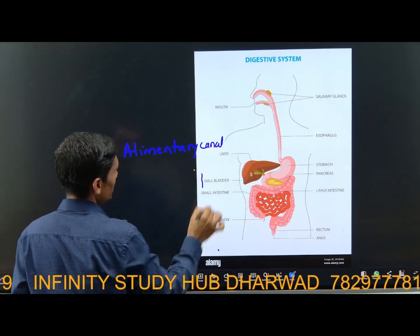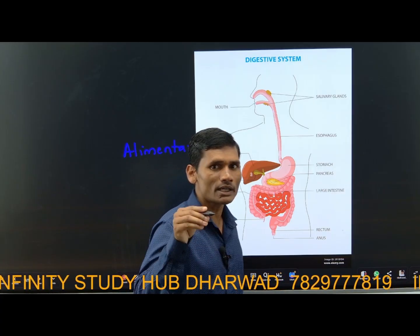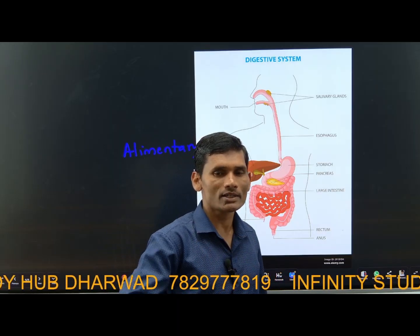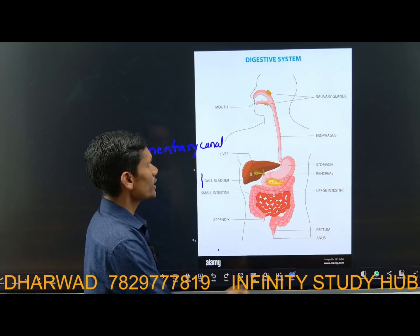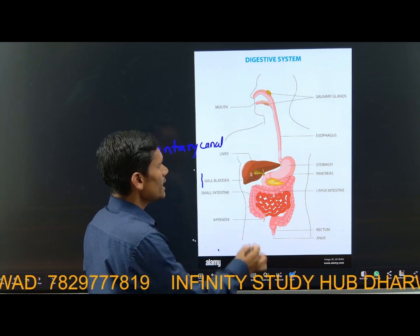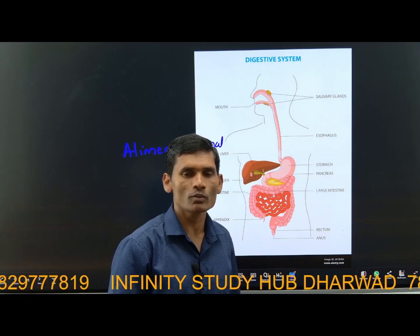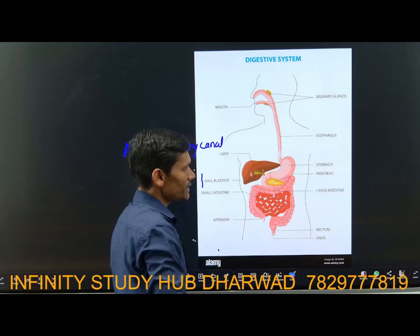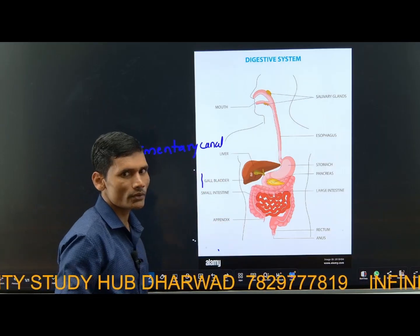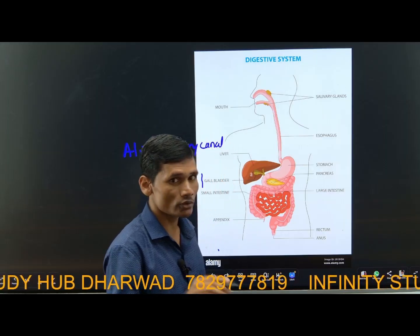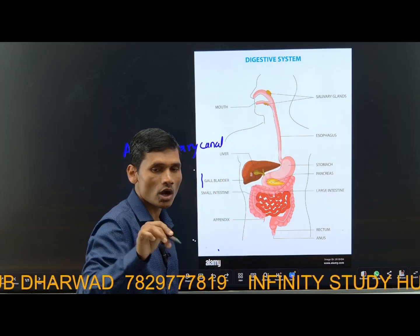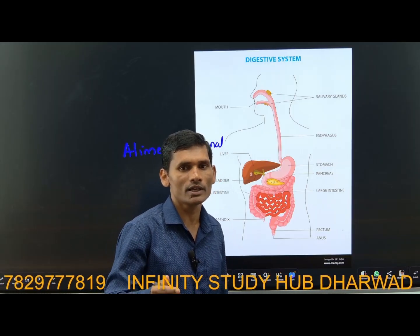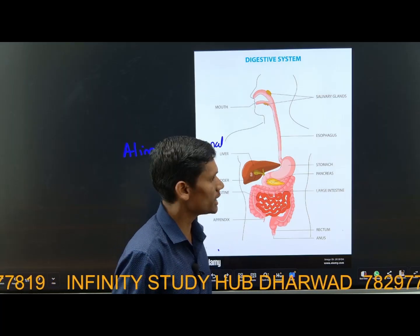This alimentary canal, plus some other digestive glands, form the digestive system. For example, in the buccal cavity there are salivary glands. Liver is there — liver is the largest gland in the human body. Next comes the pancreas. These associated glands and the alimentary canal together we call the digestive system. You have to include those glands also, because unless they secrete their secretions, food will not be digested easily.